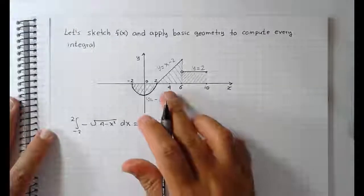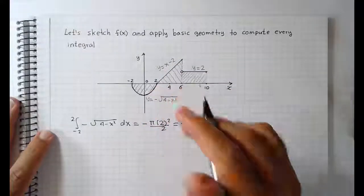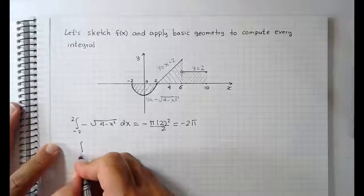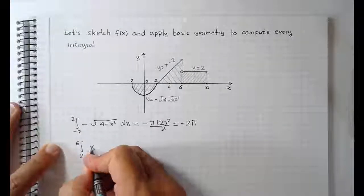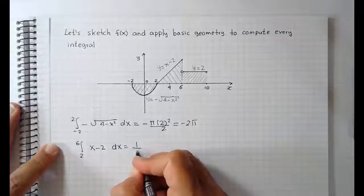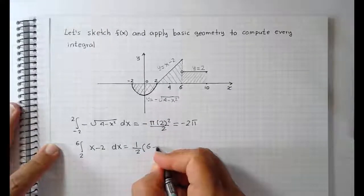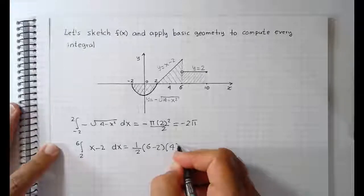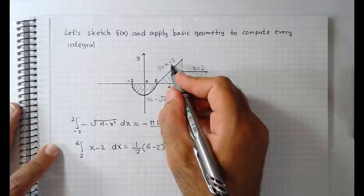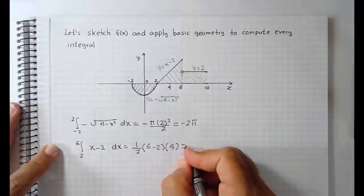Now we're going to find the area underneath the line y equals x minus 2. This is just a triangle where the base is 4 and the height is 4. The integral from 2 to 6 of x minus 2 dx is one half times the base, which is 6 minus 2, times the height, which is 4. To find the height, plug in x equals 6 into y equals x minus 2: 6 minus 2 is 4. This gives us 8.